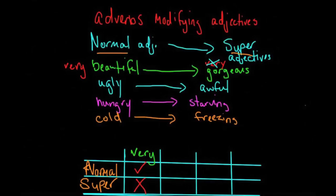The next one we're going to take a look at is absolutely. Absolutely does not modify normal adjectives, but it does modify super adjectives. So we do not say absolutely ugly, but we do say absolutely awful.